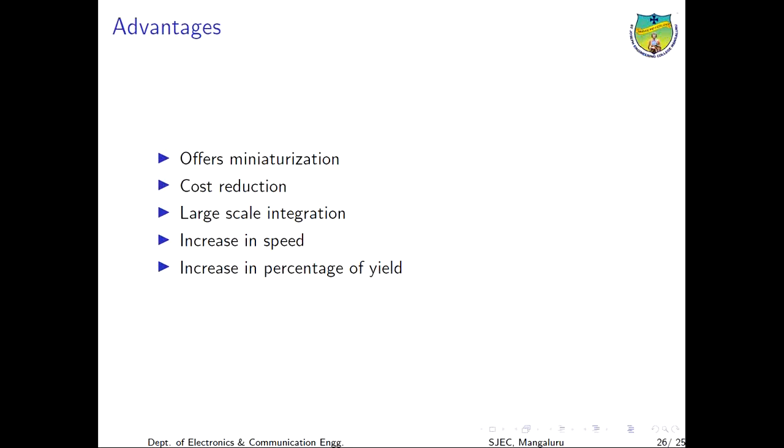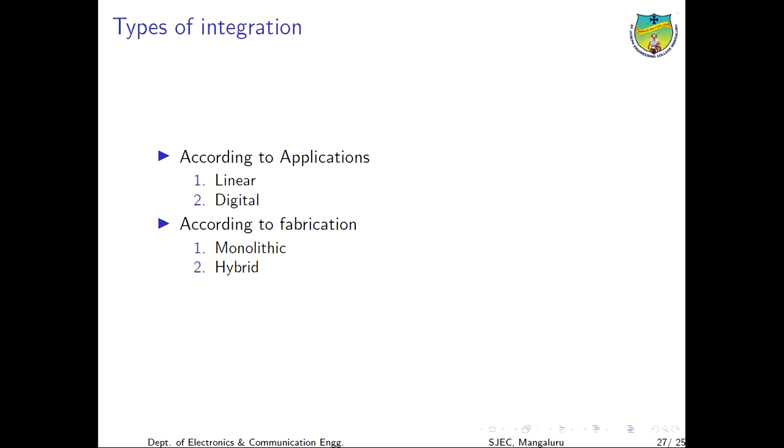Moving on to the types of integrated circuits. There are basically two types of integrated circuits: one based on application and the second based on fabrication. According to applications, there are two types: linear IC and digital IC. According to fabrication, there are two types: monolithic ICs and hybrid ICs.